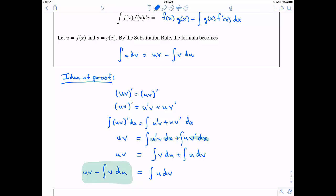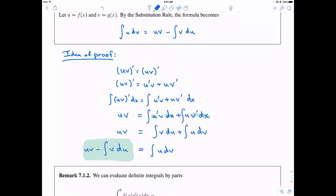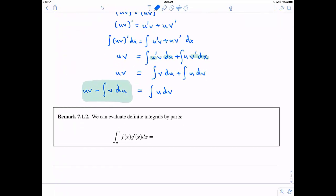I have one more remark for you on this page. We can use integration by parts not only on indefinite integrals, but actually on definite integrals as well. So, now we have limits, a and b. In this case, it's going to be f of x times g of x evaluated from a to b minus the integral from a to b of g of x times f prime of x dx. It's essentially the same formula as we have above, but now we just have limits.